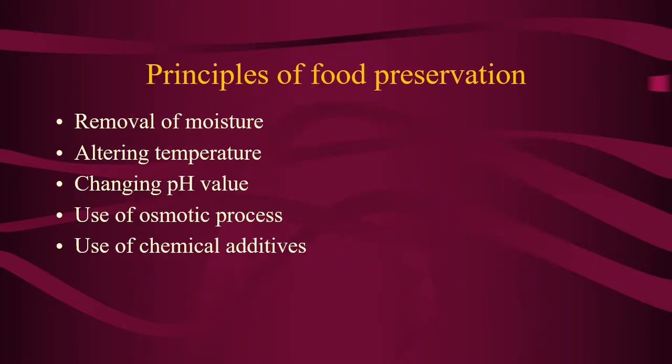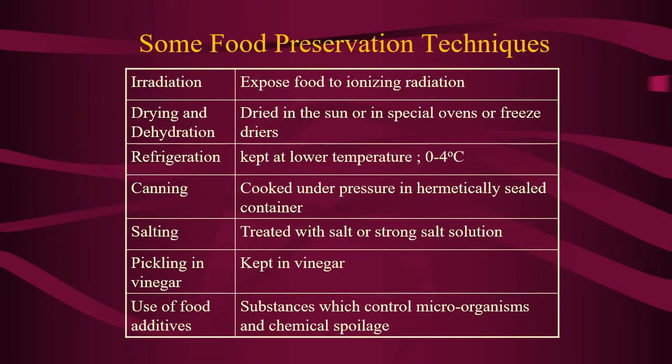In food preservation, there are five principles that can be applied: the first is the removal of moisture, the second is altering temperature, the third is changing the pH value, number four is using the osmotic process, and number five is the use of chemical additives.